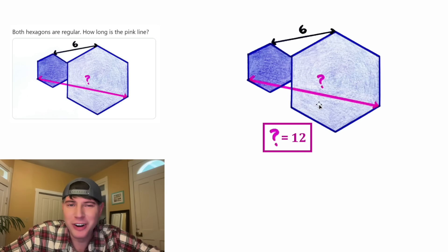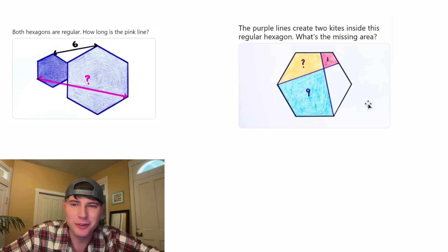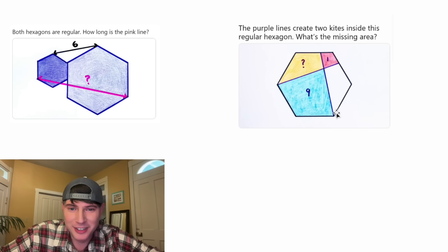This was day two of our Advent calendar. And this is day three. We're given a regular hexagon with two purple lines that create kites inside of the regular hexagon. And it wants to know what is this missing area. This looks like it'll be a fun one. I can't wait to see the video. How exciting.